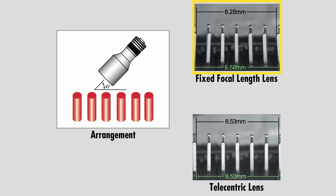In your application, you may have a need for a constant image height. Let's say that you are inspecting circuit boards that have pins on them, and you need to look straight down at the pins. With a traditional lens, the pins will appear to come at you from different angles.